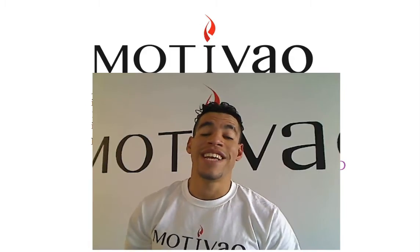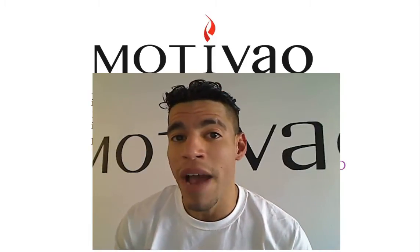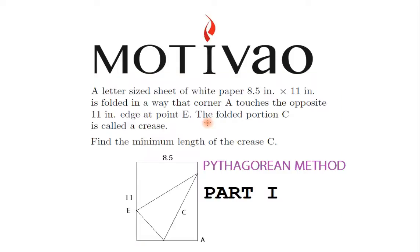Hi guys, this is Joshua from Multivalent 9 Instructors and today in extreme math we're going to talk about a very particular exercise. It says, a letter size sheet of white paper, 8.5 inches times 11 inches, is folded in a way that corner A touches the opposite side at point E and the folded portion is called a crease.